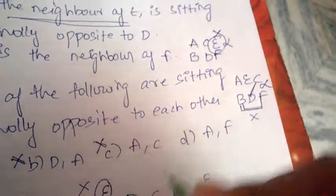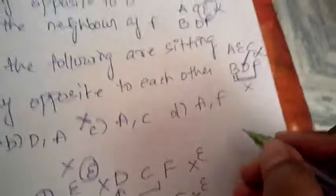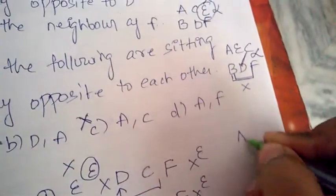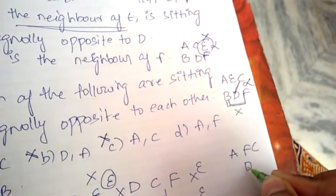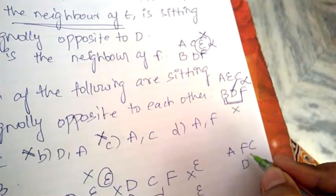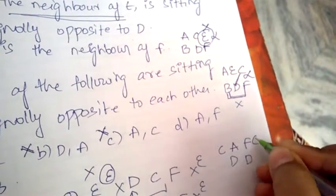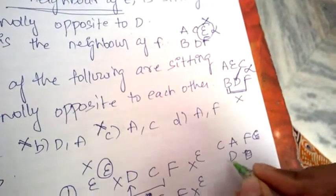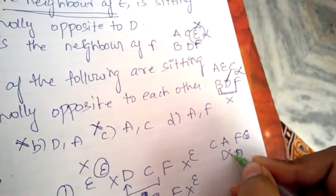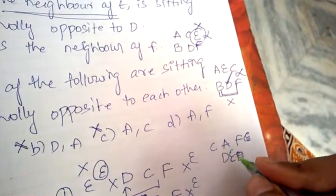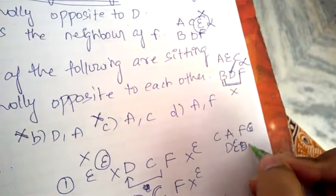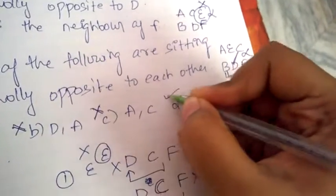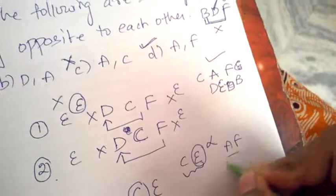That option is also wrong. Next, let's try A and F. By analyzing: D will be diagonally opposite to C — yes, this is correct. So the final answer is A and F.